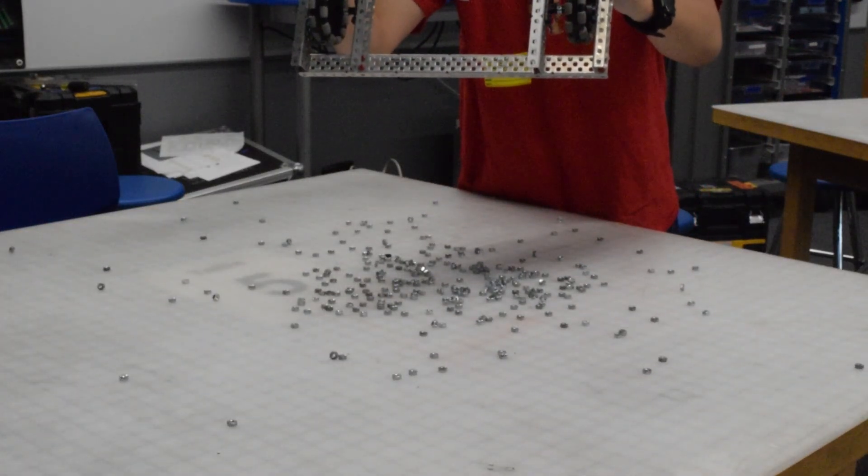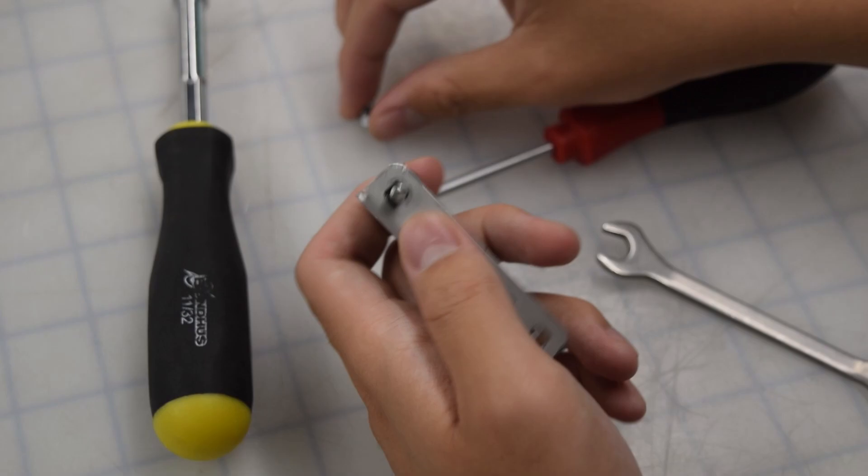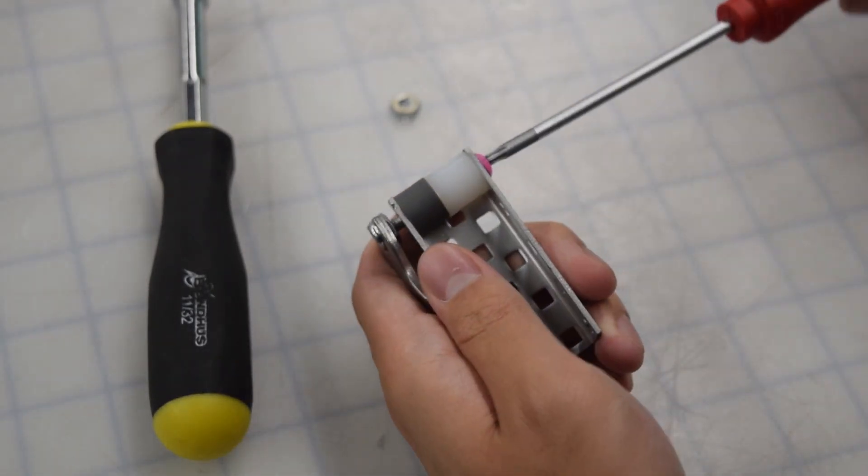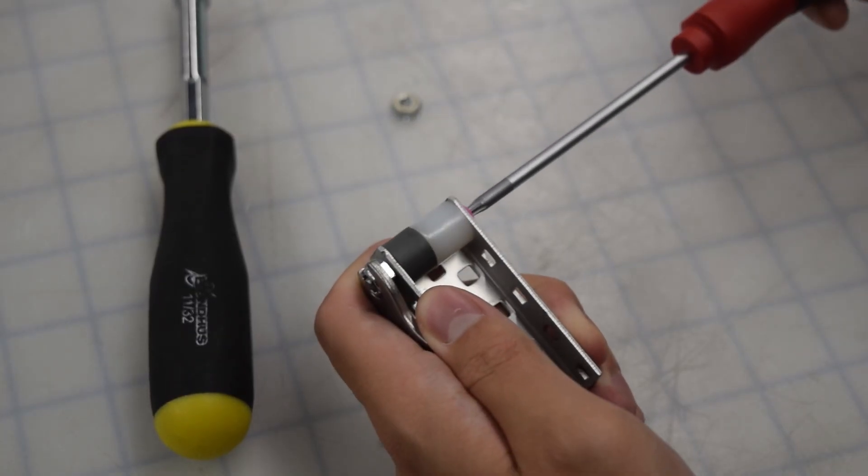However, you'll need some extra tools to tighten them. In addition to your screwdriver, you'll need a wrench. As you can see here, all you need to do is hold the nut with the wrench and turn the screwdriver to the right.